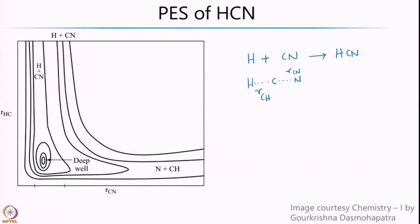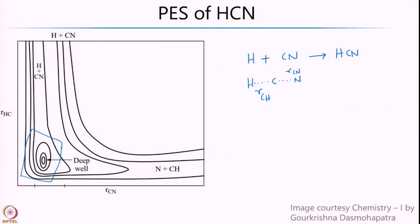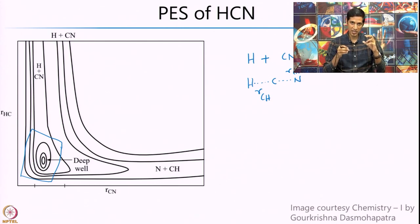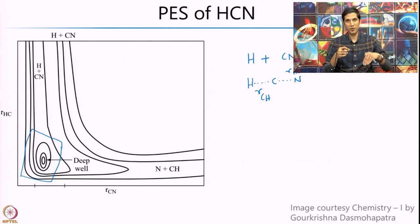The striking difference you would notice is that when RCN and H come closer together, there is a very deep hole or a very deep well in this part of the contour map. What this suggests is that H plus CN, when they come together, form a very strong bond — the HCN bond. Please compare and contrast this with the H3 system where we had a top of a hill around this region, whereas in the HCN system, because of the attractive interaction, you have a very deep well or bond formation.